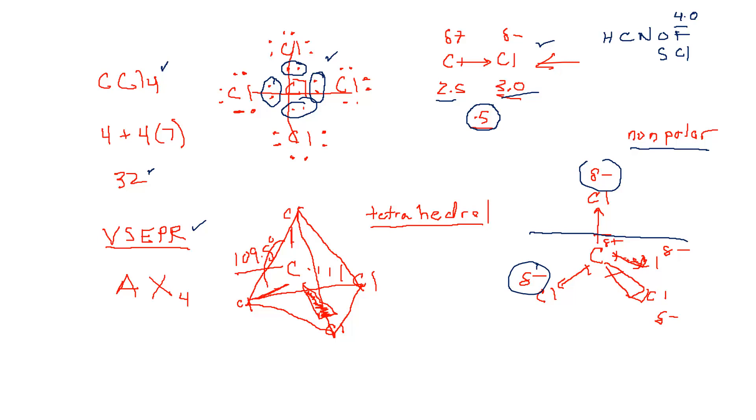This is called a tetrahedral framework, but it's also called a tetrahedral geometry. Once we place the chlorines in the corners of the tetrahedral and we draw this structure and then apply the bond polarities to the structure, we can determine that the molecule itself is nonpolar. The molecule does not have a positive and negative end to it. Knowing that this molecule is nonpolar, we now can say that this substance will not dissolve in water.